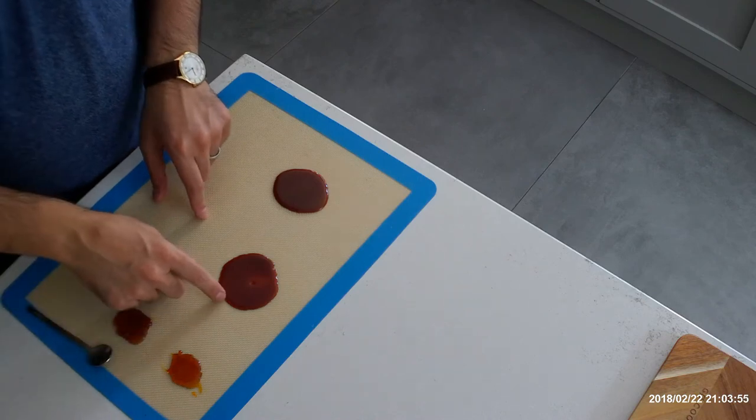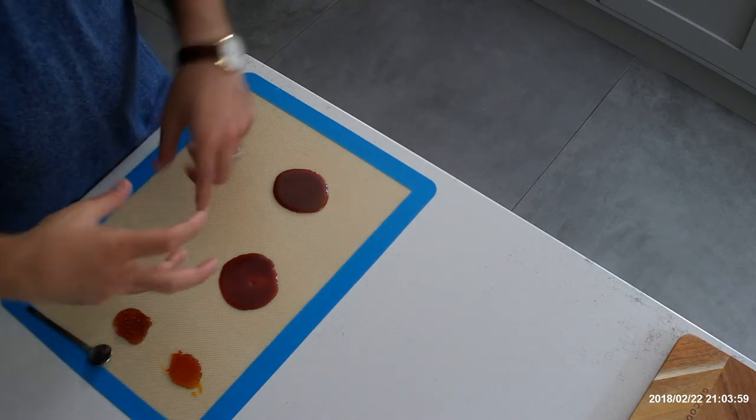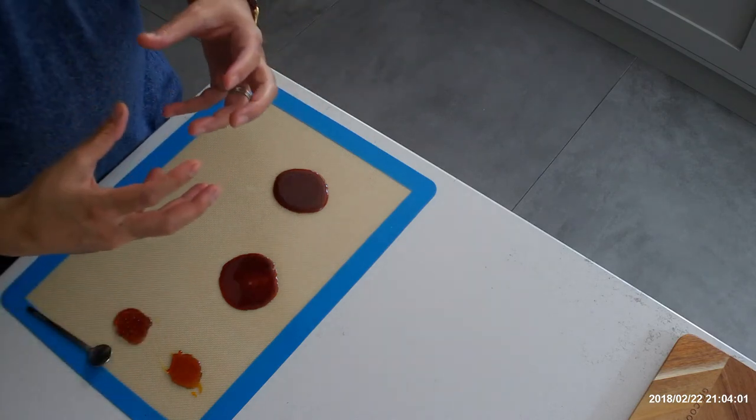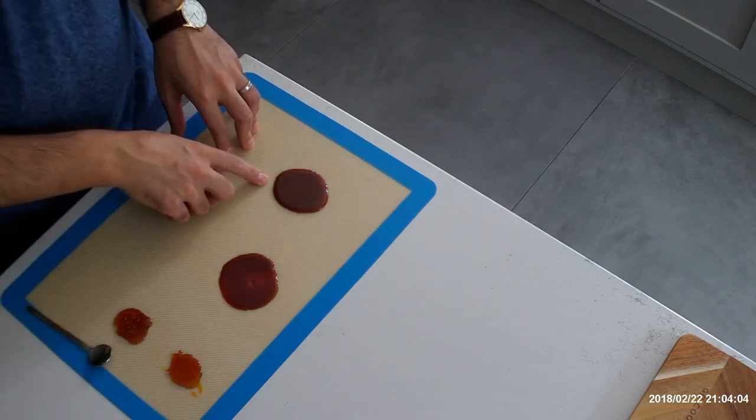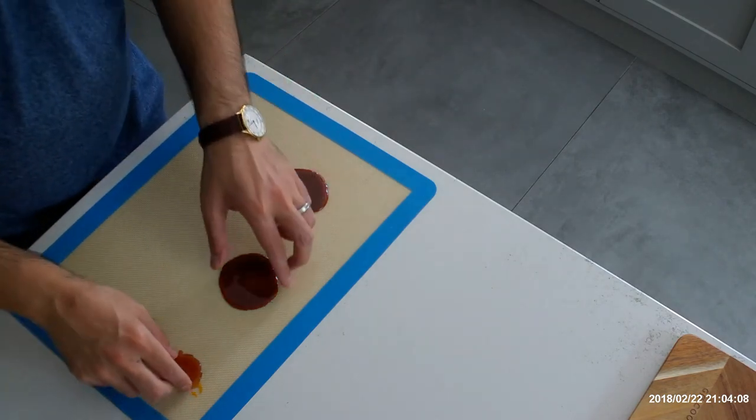This is the one that we made where we stirred the sugar together and as you remember that kind of clumped it together and then it just heated too far. And this is the one we made with icing sugar which again got very hot. You can see the color differences here.